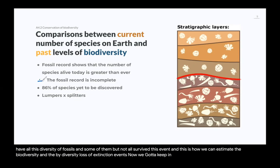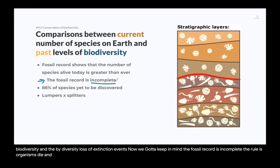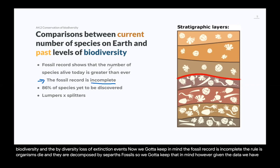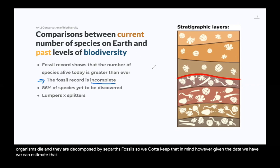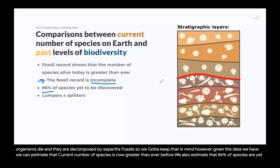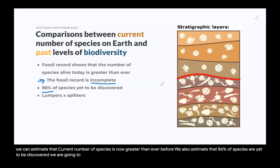We've got to keep in mind the fossil record is incomplete. The rule is organisms die and they are decomposed by saprotrophs instead of becoming fossils. However, given the data we have, we can estimate that the current number of species is now greater than ever before. We also estimate that 86% of species are yet to be discovered. We'll see later how we estimate biodiversity so that people can come up with numbers like that.